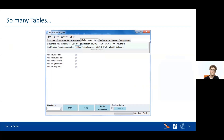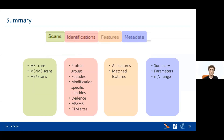If you feel overwhelmed because there are so many tables, note that it's not necessary to generate all of them. You can select which tables you want MaxQuant to produce, reducing the number. In summary, we have four different groups of output tables: the identifications class, which is the most important for biologists; the scans tables, which allow many kinds of quality control; the metadata, similarly useful for QC; and the features class, where you have information about everything that was not identified as a specific peptide or protein.